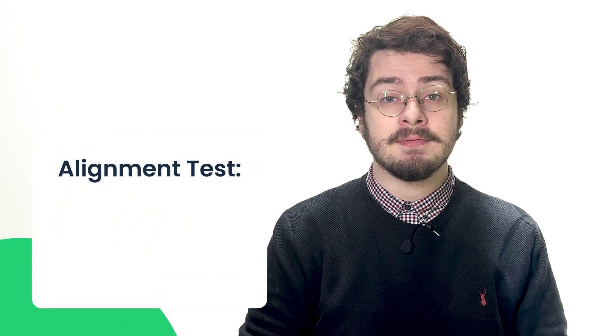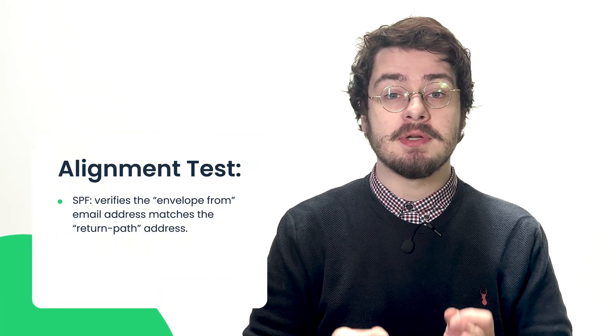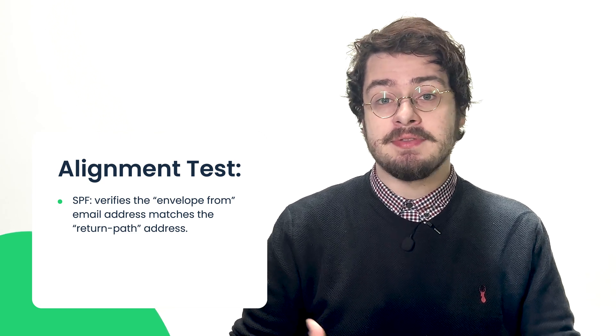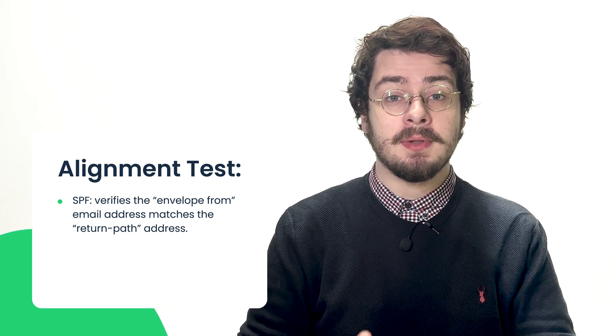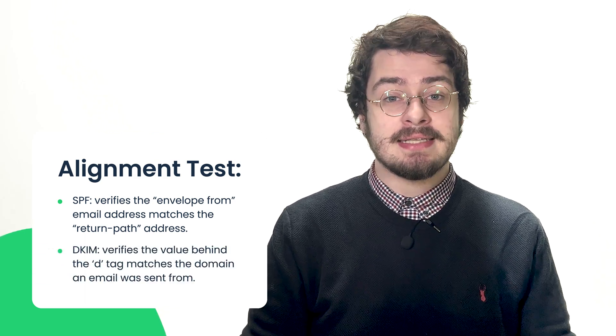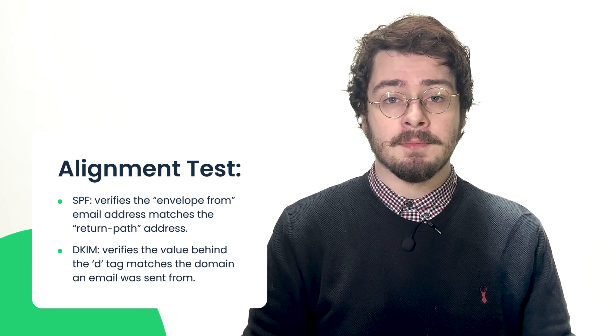After DKIM or SPF is performed, a receiving server then performs a so-called alignment test. It verifies if, in the case of SPF, the envelope from address matches the return path address — in other words, it checks if the email address of the message is the same as the address a reply would go to. In the case of DKIM, the value behind the D tag, which is the send-as domain, matches the domain an email was sent from.